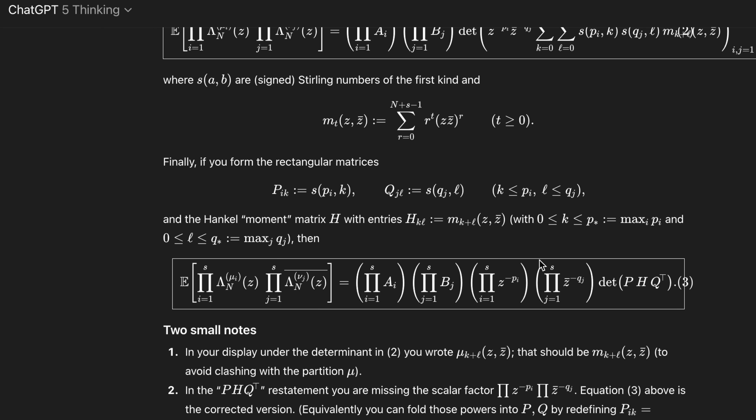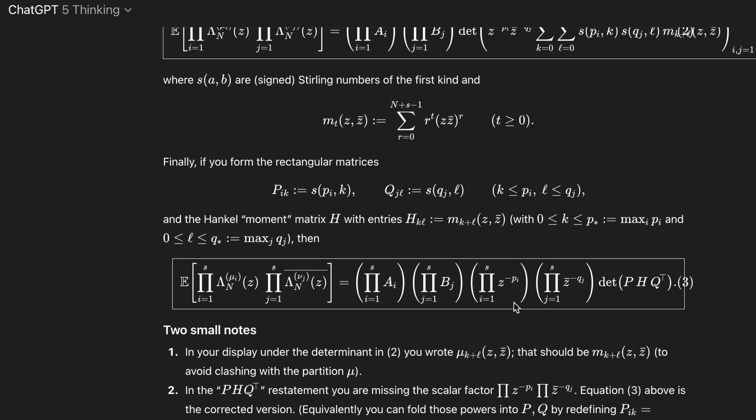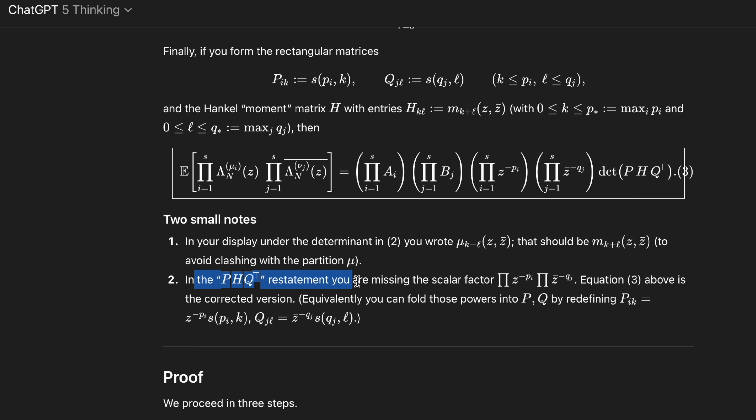I believe it's here. In the prompt I hadn't put these terms in Z, but I knew that they were there because in the previous theorem they're there — I just forgot to type them into the prompt. It just goes to show that there's some useful capacity either way. The fact that it can correct — in the blah blah blah restatement you're missing the scalar factor Z — that's quite impressive to be fair.